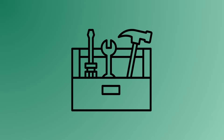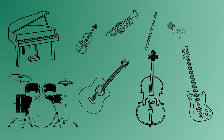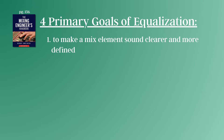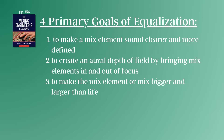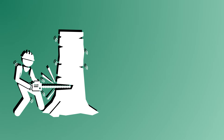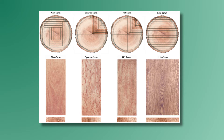So all of that said, you can think of EQ as a tool to help you accentuate certain frequencies over others. This differs from instrument to instrument, and that itself is something that professionals study for years and years. Ozynski says the four primary goals of equalization are: one, to make a mix element sound clearer and more defined; two, to create an aural depth of field by bringing mix elements in and out of focus; three, to make the mix element, or mix, bigger and larger than life; and four, to make all of the elements of a mix fit together better by putting each one in its own predominant frequency range. Knowing how to use EQ is what can separate an amateur mixing engineer from a professional one. A piece of natural wood can be really beautiful on its own, but a carpenter will know exactly how to cut and sculpt that wood to make it functional and make its natural grain stand out — that's what sound engineers are doing with EQ.